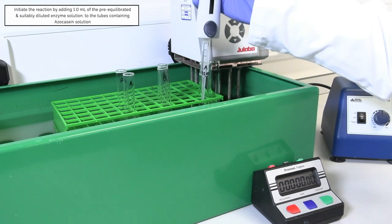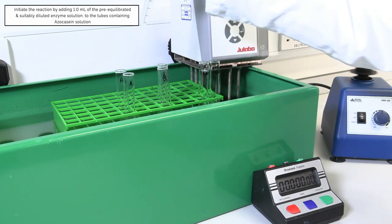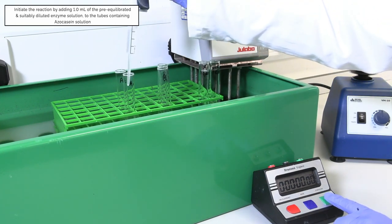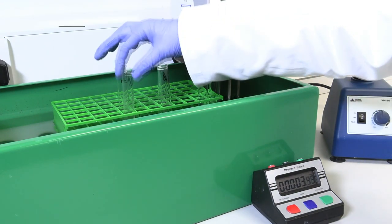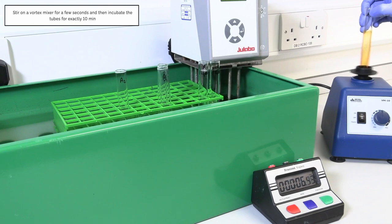Initiate the reaction by adding 1 ml of the pre-equilibrated and suitably diluted enzyme solution to the tubes containing azo casein solution. Stir on a vortex mixer for a few seconds and then incubate the tubes for exactly 10 minutes.